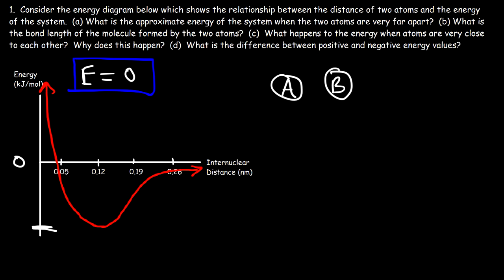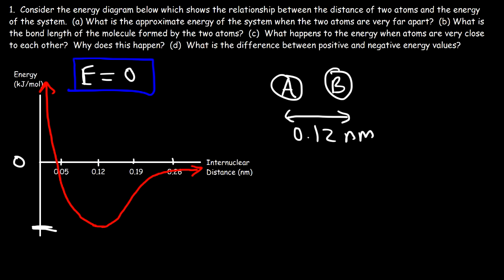The minimum energy occurs at a distance of 0.12 nanometers. So when the distance between the centers of the two atoms is 0.12 nm, the energy of the system is at its minimum value, and that distance is known as the bond length. Keep that in mind for chemistry exams: the bond length occurs when the energy of the system is at a minimum.